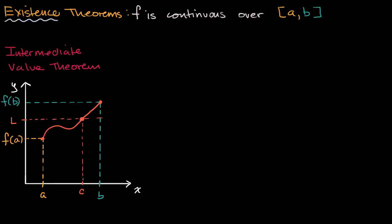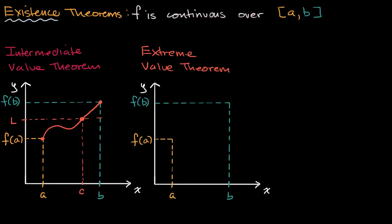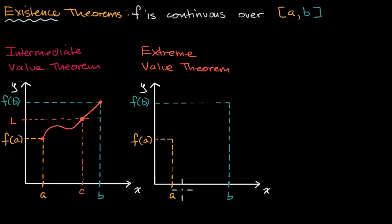The second is what's often known as the extreme value theorem, and this one is similarly intuitive. Once again, it assumes that f is continuous over this closed interval. But here we say: if it is continuous over that closed interval, then there exists — that's why they're called existence theorems — there exist values between a and b, possibly at a or b, where the function takes on a maximum, and there's a value between a and b where the function takes on a minimum value over that interval.